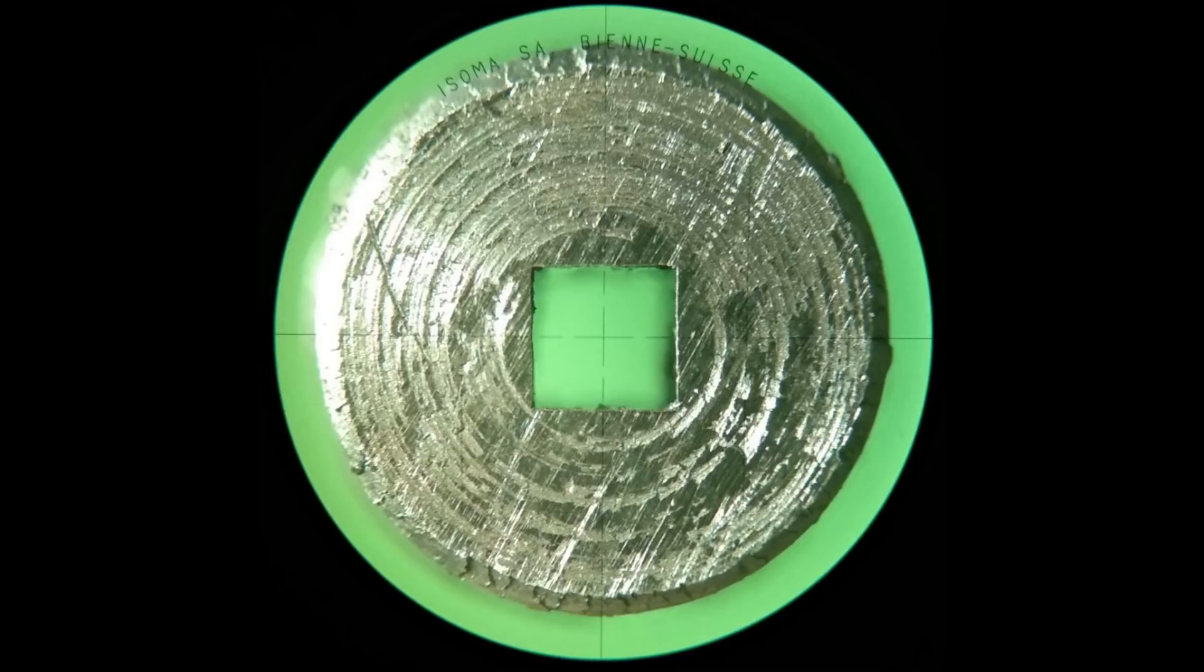But also you can see the 1x1 millimeter square that I broached into the material and it looks quite decent. It has nice sharp corners and came out relatively good.